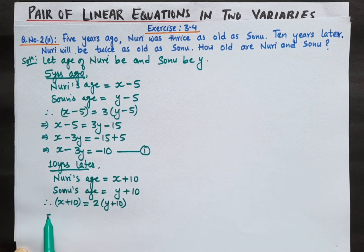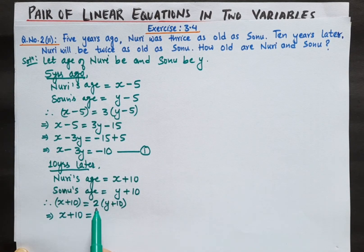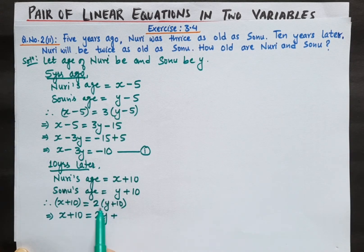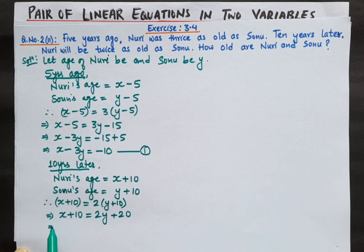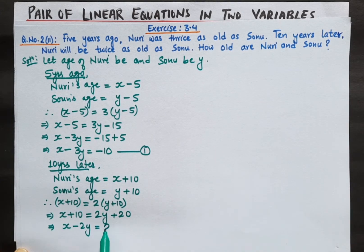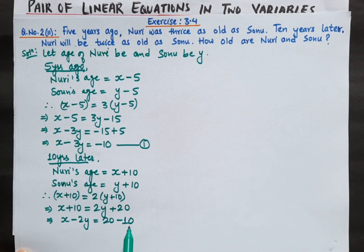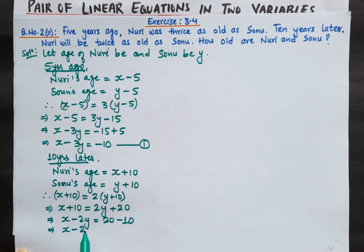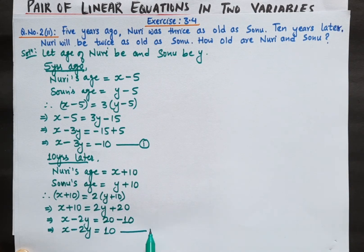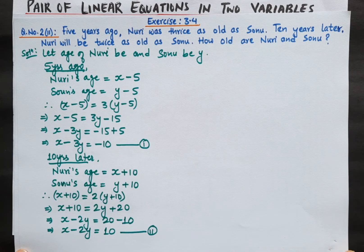Let's make equation number 2. So x plus 10 equals 2y plus 20. Bringing variables together: x minus 2y equals 20 minus 10, which gives x minus 2y equals 10. This is our equation number 2.